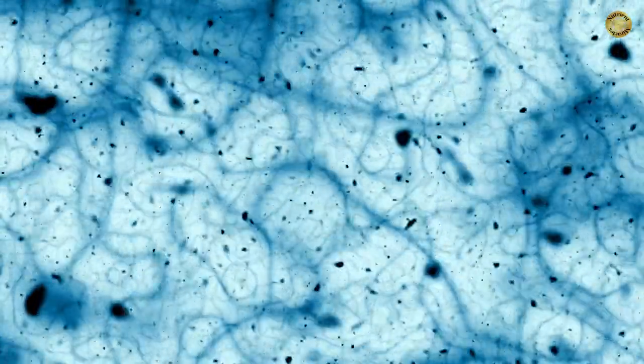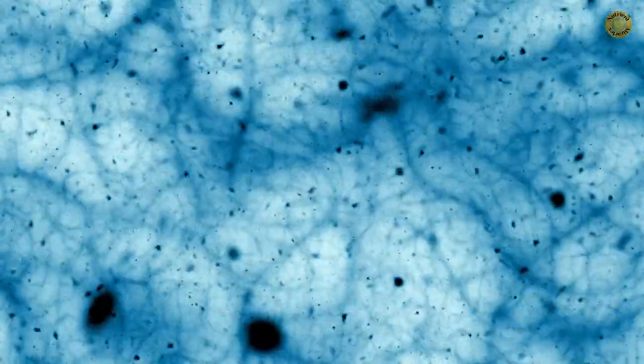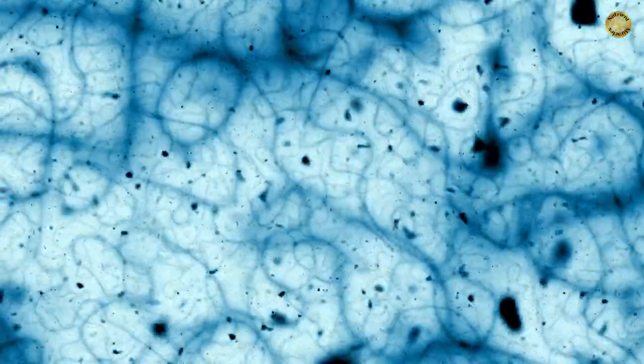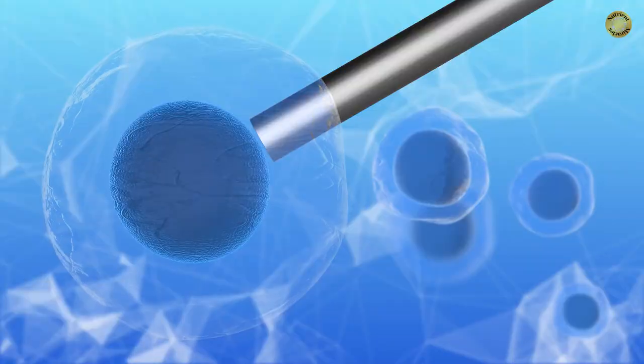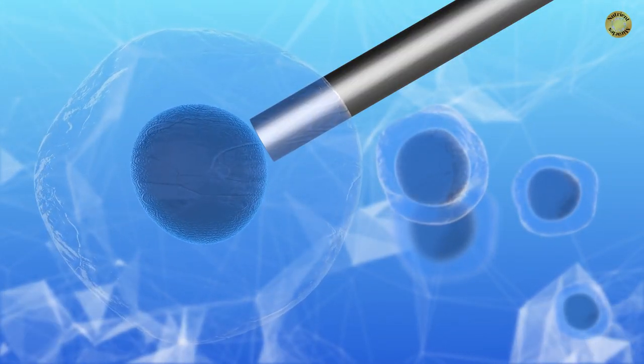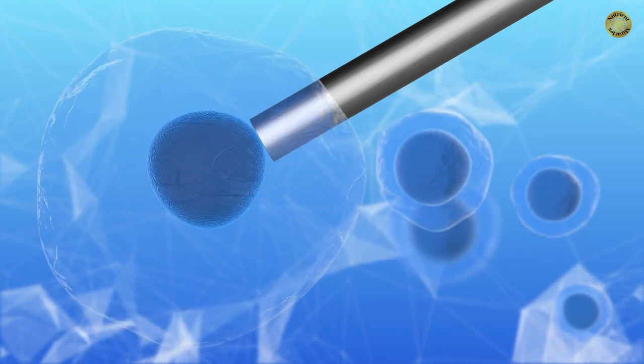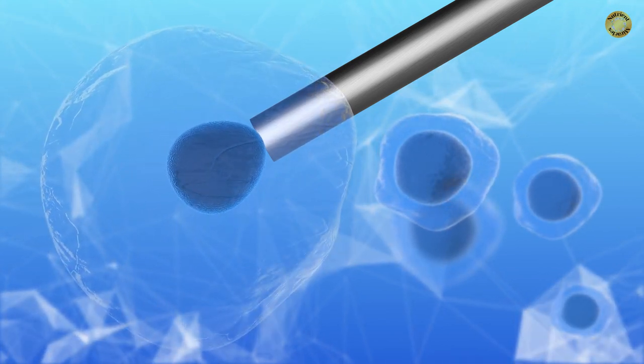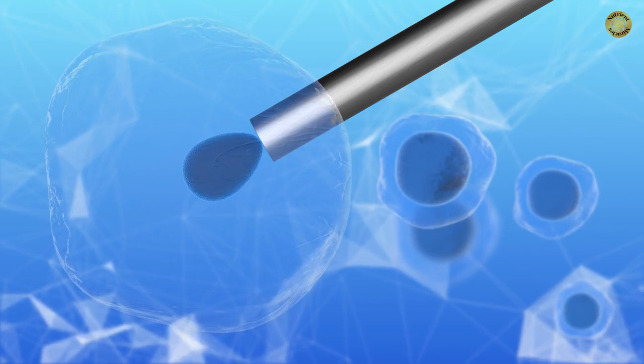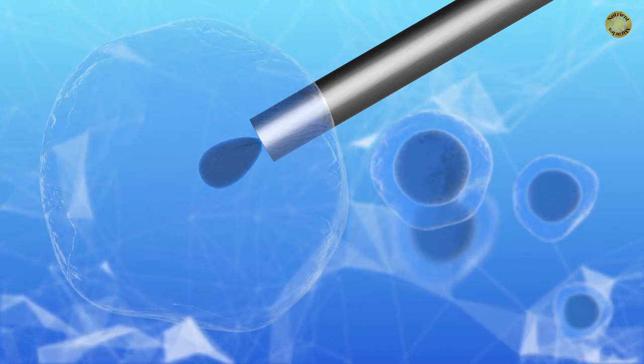Adult stem cells, though more limited, still hold significant potential for tissue repair and maintenance. Induced pluripotent stem cells, or iPSCs, are adult cells reprogrammed to behave like embryonic stem cells, offering new possibilities.